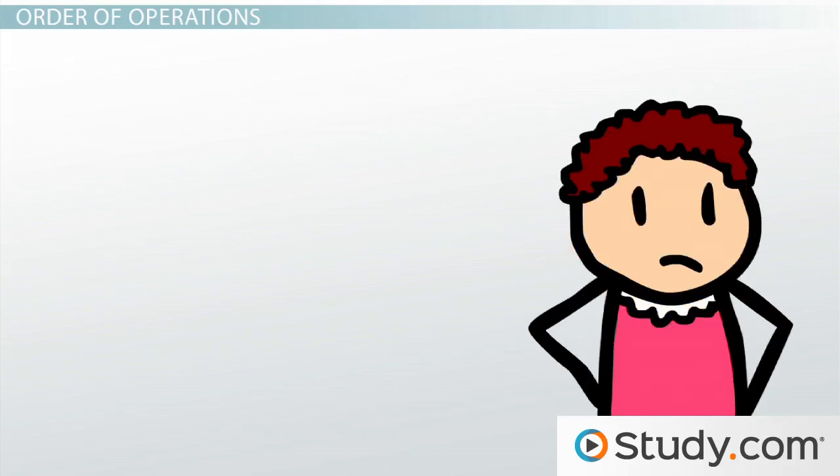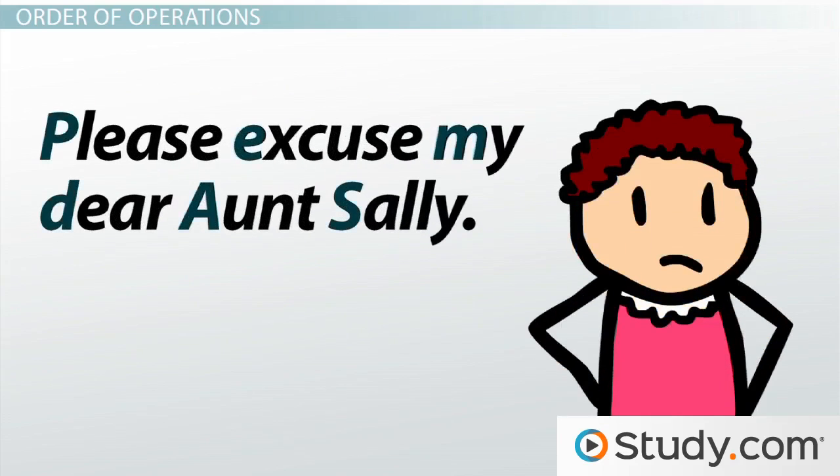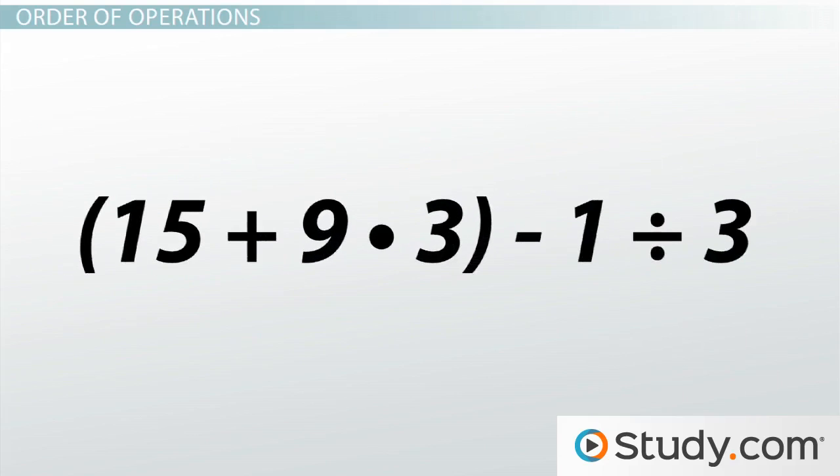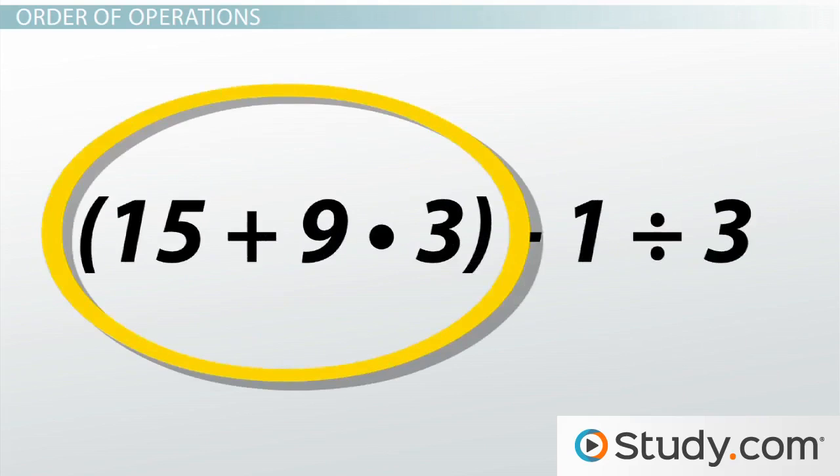You will often hear people say, "Please excuse my dear Aunt Sally." This is a way we remember which operation is done first. If you have a problem with parentheses, you will always evaluate the numbers in the parentheses first.